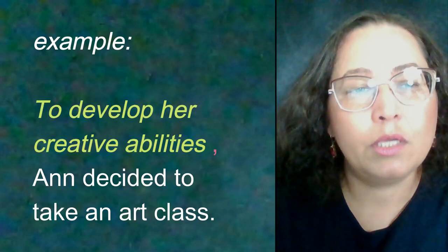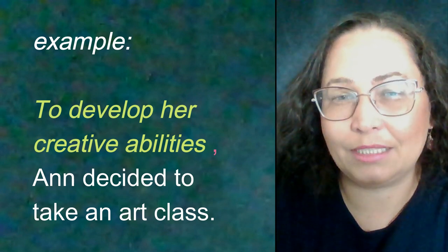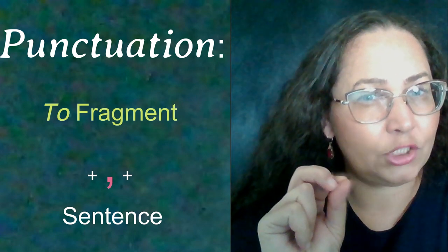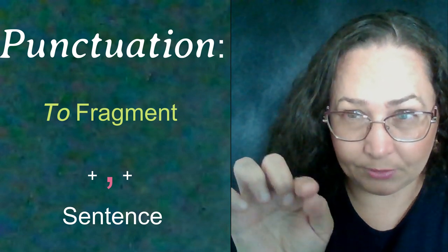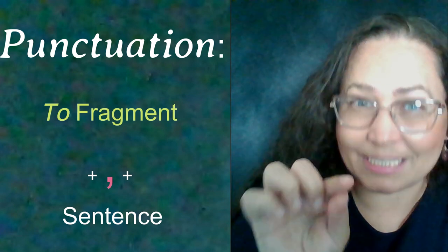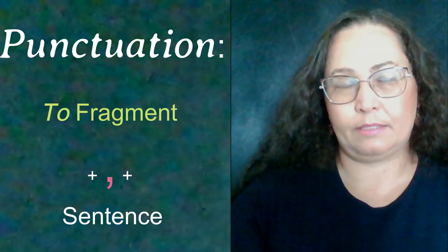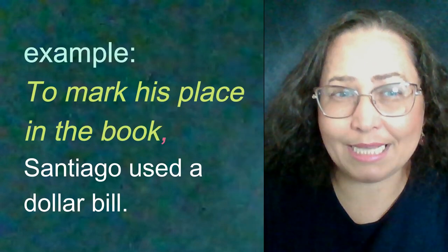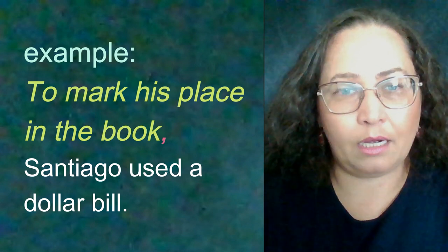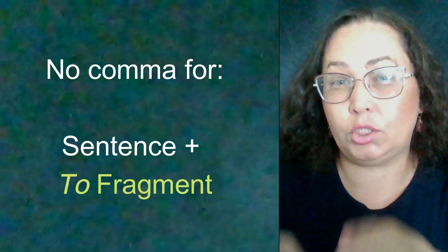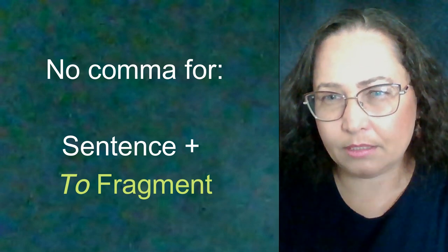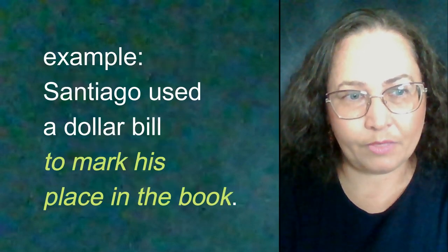By attaching the verbal phrase to a complete sentence, we can easily fix that mistake. When the to-fragment is attached to the beginning of a sentence, place a comma after it — after the fragment — because the verbal phrase serves as an introductory phrase. For example: 'To mark his place in the book, Santiago used a dollar bill.' However, if the to-fragment is added to the end of the sentence, do not place a comma before it.